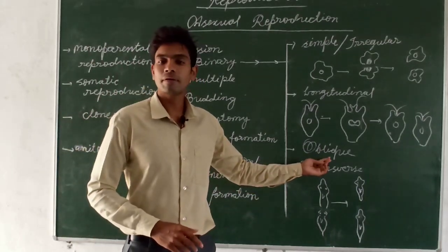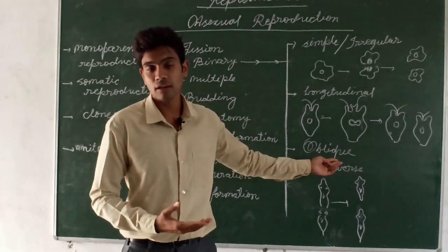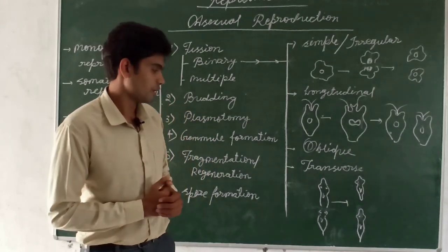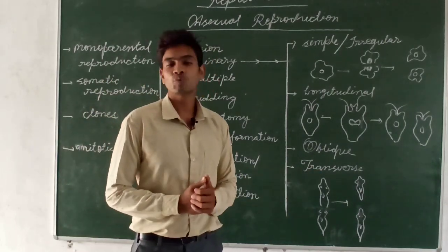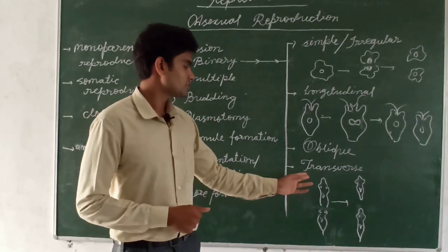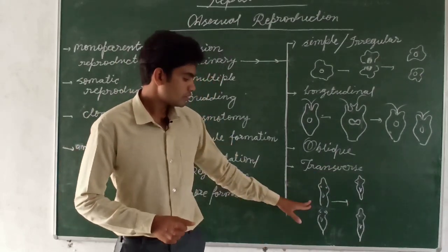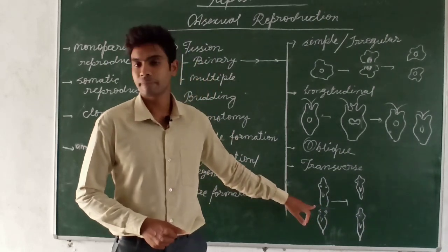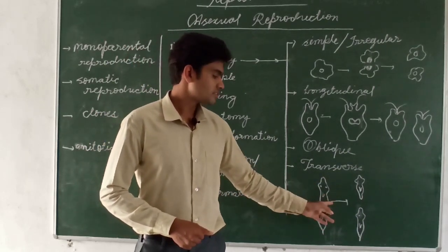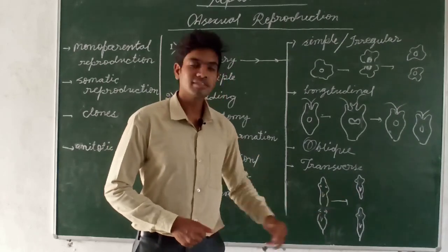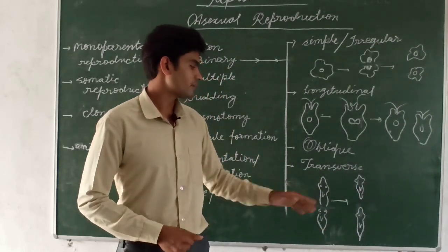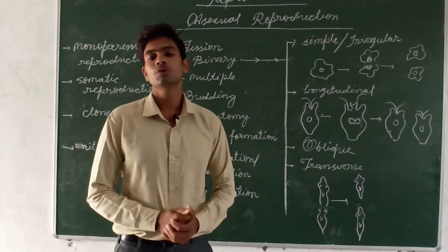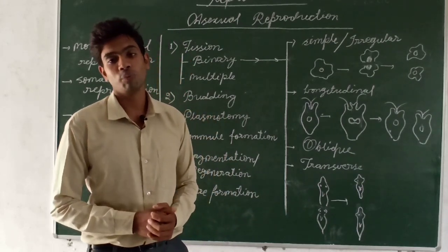In oblique binary fission, the axis of division makes some angle with the longitudinal axis of the organism — ceratium is the best example. In transverse binary fission, the organism divides in a transverse manner, splitting into two daughter cells. This type occurs in planaria. That concludes this video; other topics will be covered in the next videos.